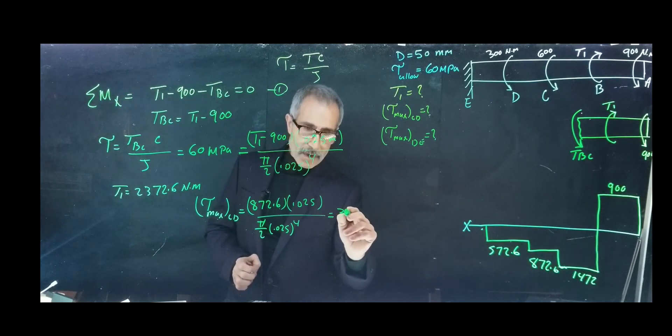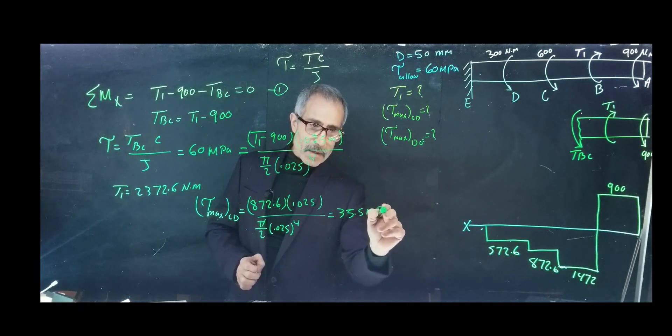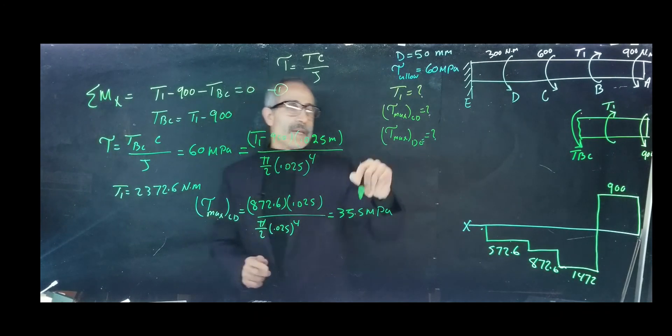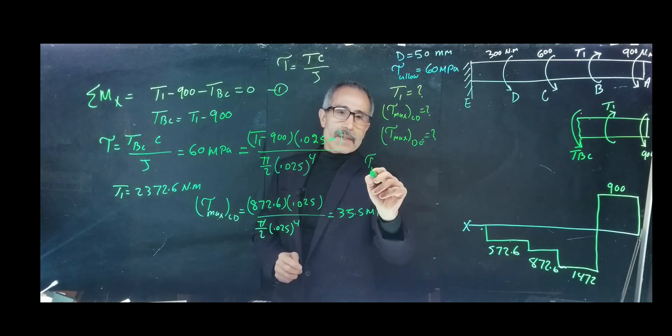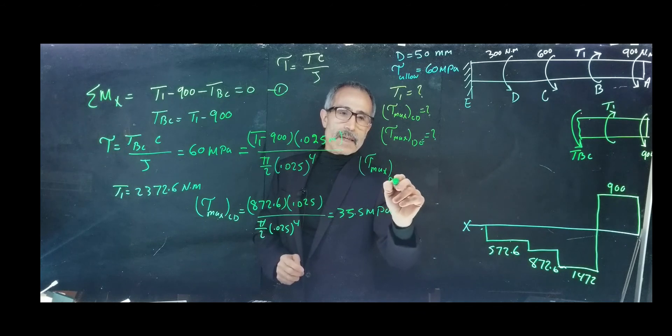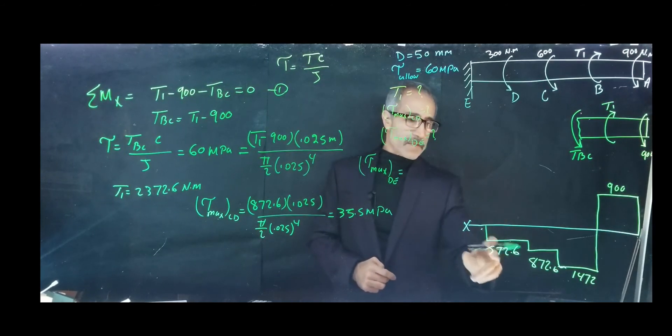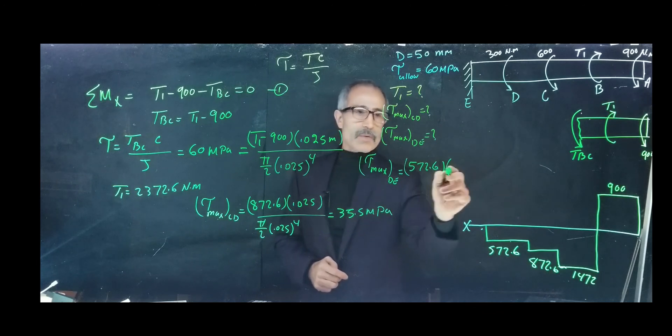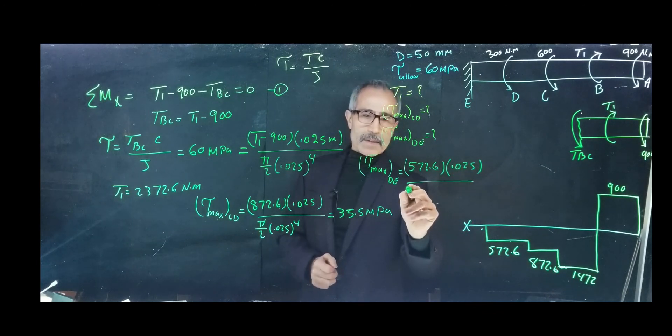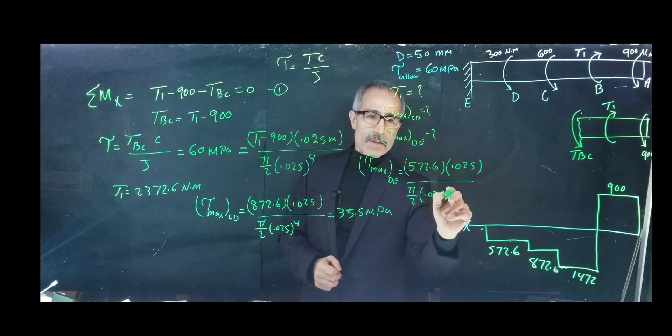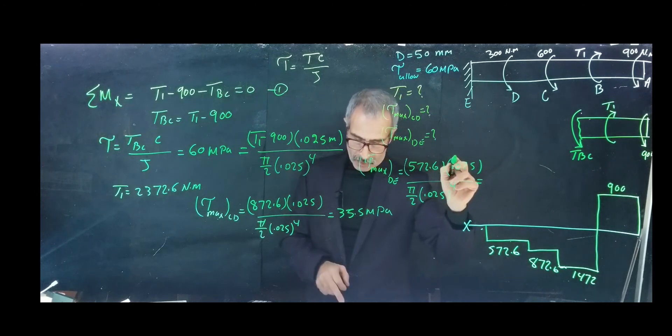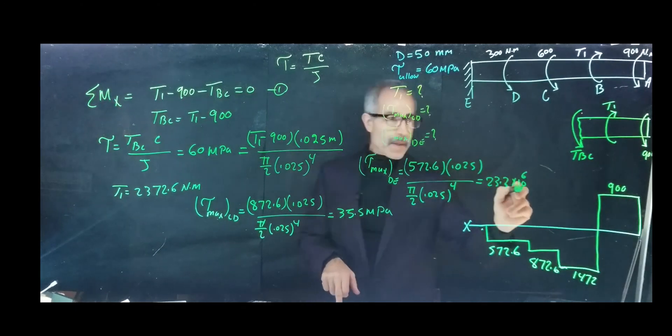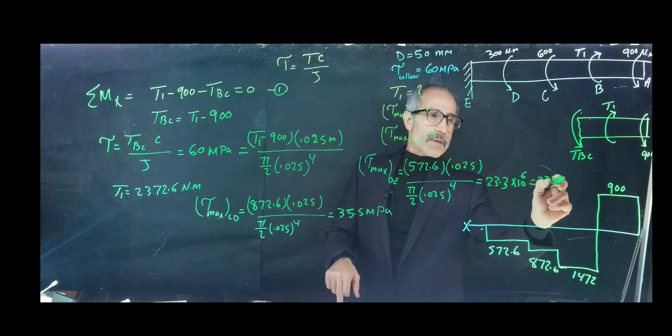Next we'll find T max for DE. T max DE is 572.6 multiplied by 0.025 divided by the same thing, pi divided by 2 times 0.025 to the power of 4. That gives us 23.3 megapascal.